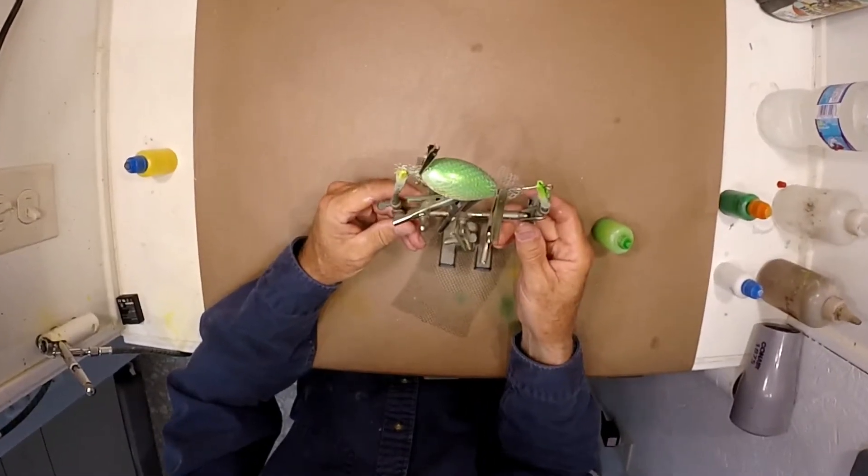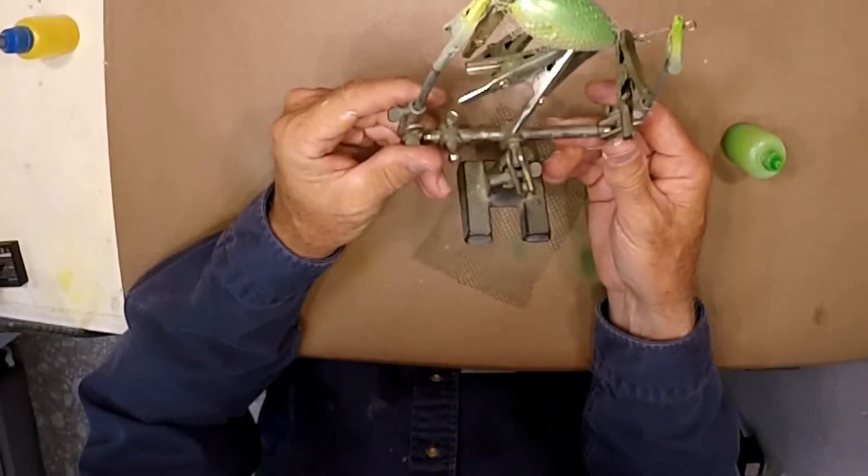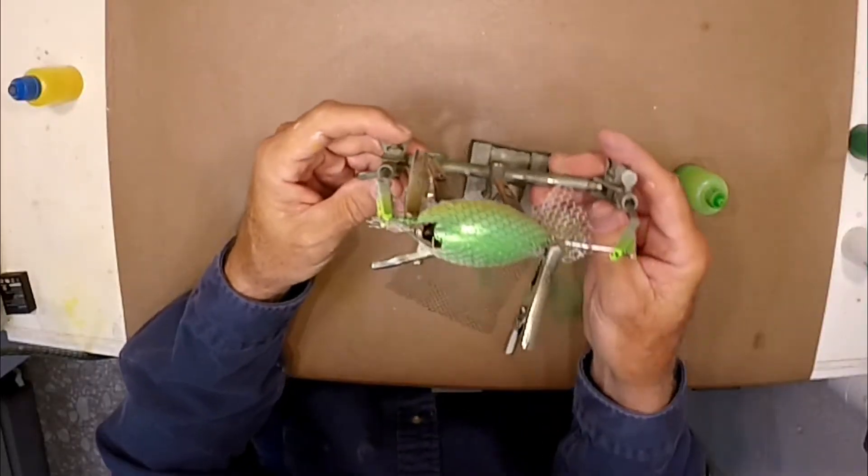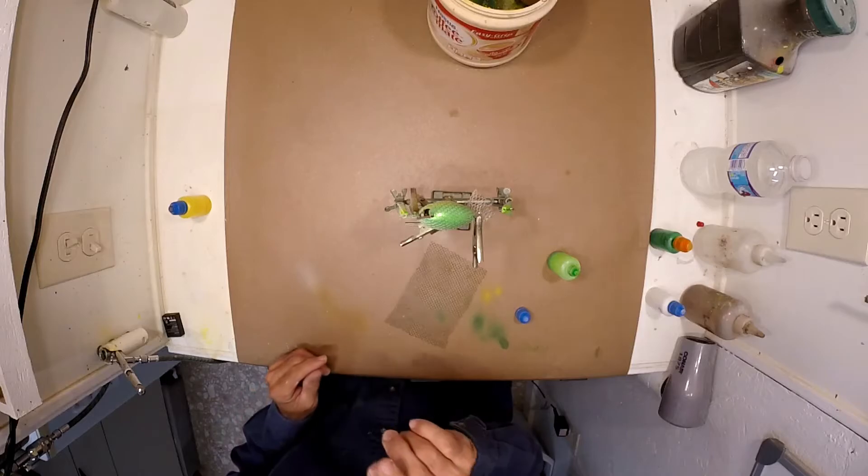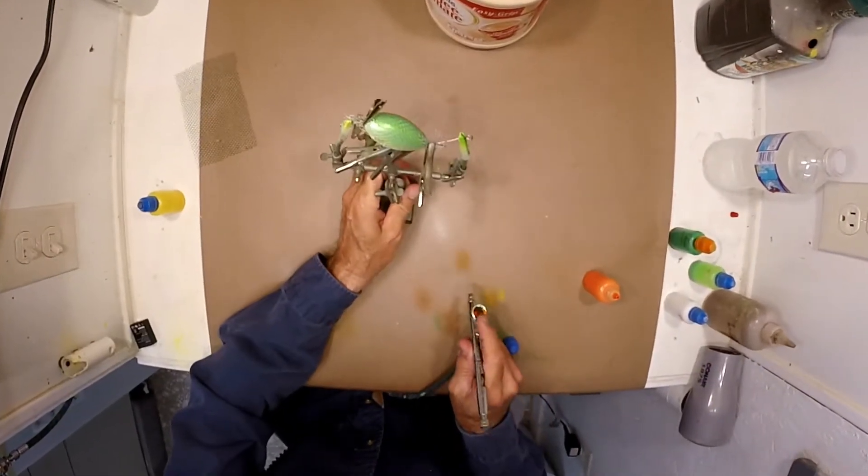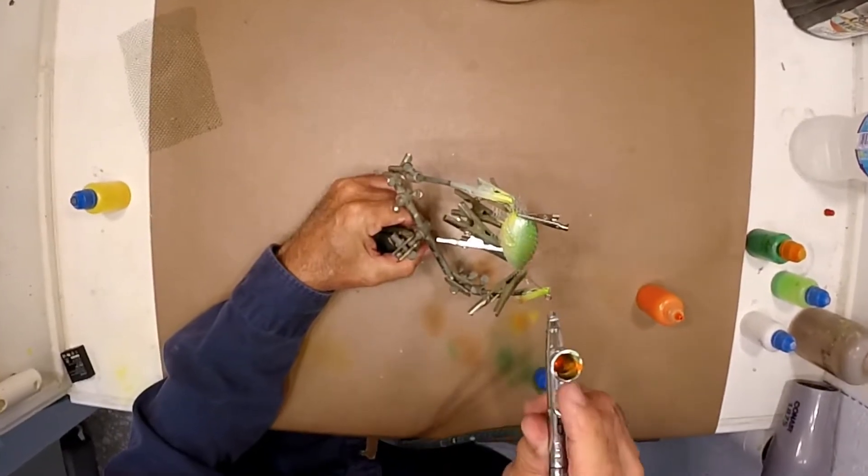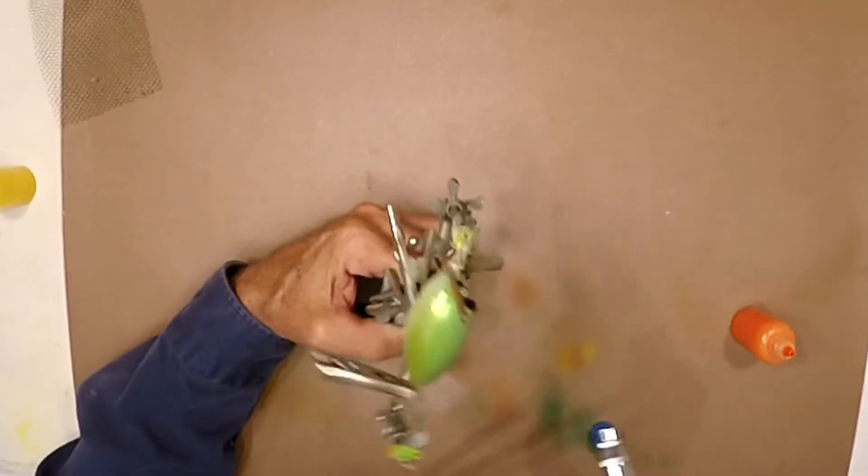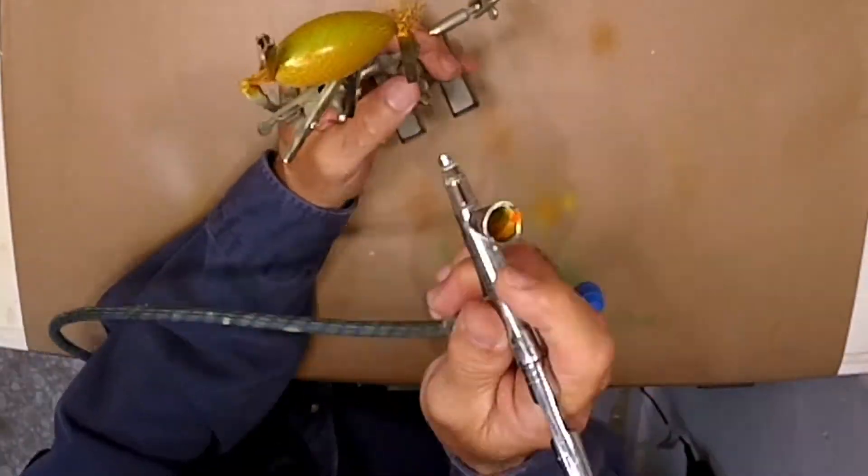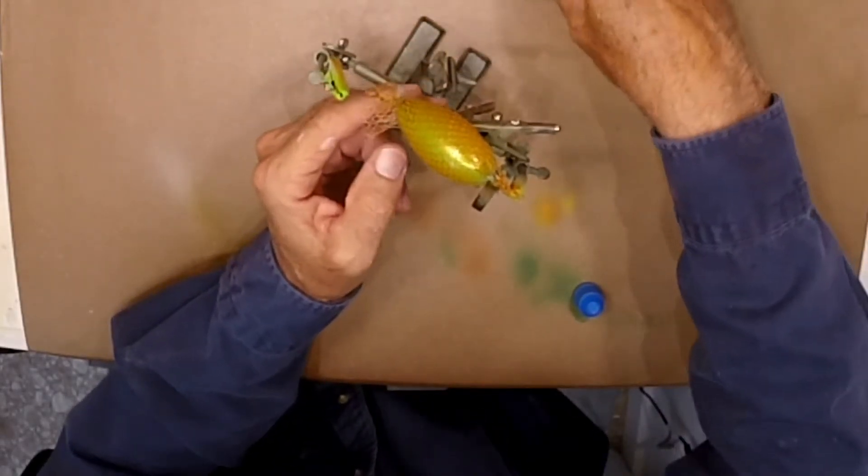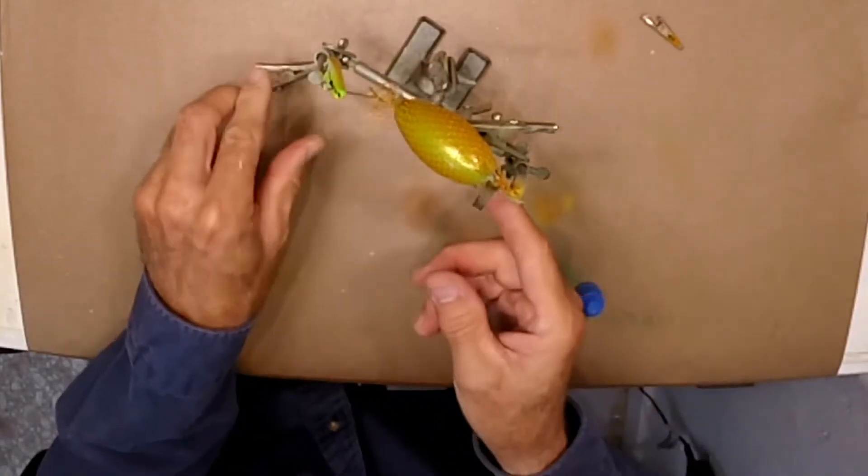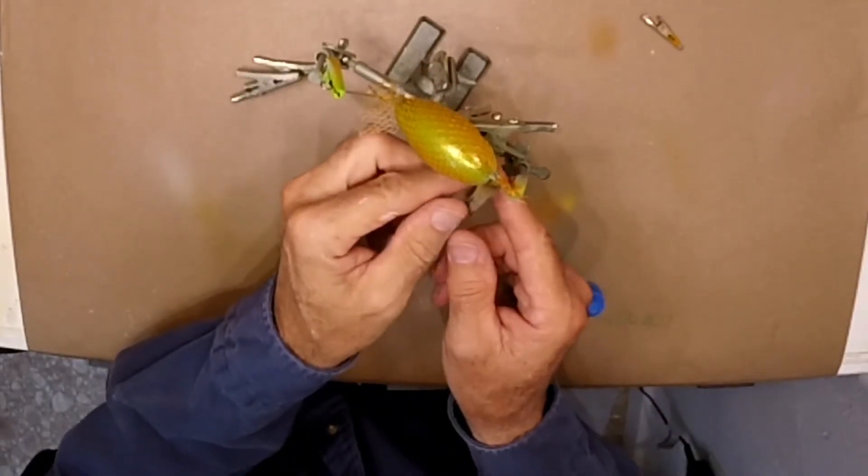All righty then. It's ready for that scale pattern. It's quite the cluster. These lures that are this round that have these tight compound curves are really hard to get these netting around. What I'm going to do now is hit it with orange.